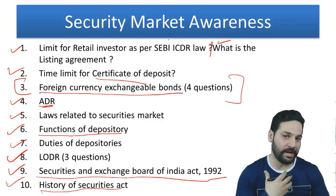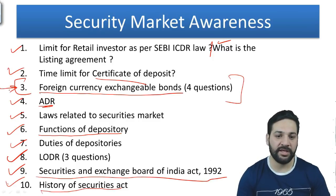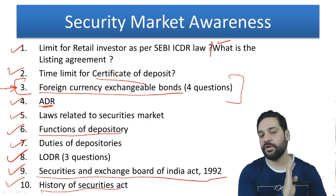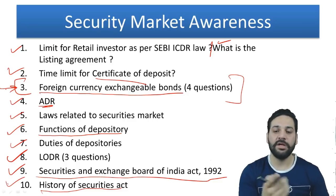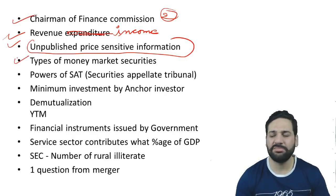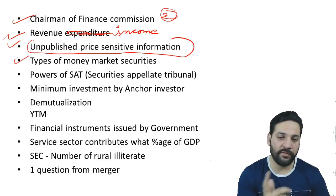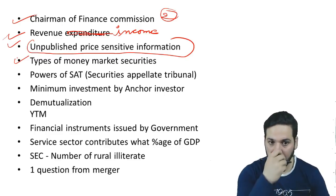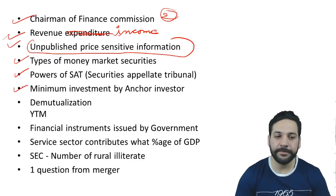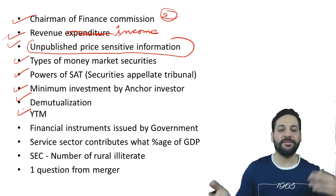There was a question on unpublished price sensitive information — I did a proper lecture on that, so that was from our course. We covered everything in our course, but I admit Foreign Currency Exchangeable Bonds was not covered properly — those four questions were not from our course. There were also questions on types of money market instruments, which instruments are issued by government, powers of SAT, and minimum investment by anchor investor.